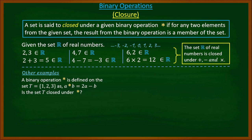Let's look at another example. A binary operation star is defined on the set T, which contains the elements one, two, and three, as a★b = 2a − b. Is the set T closed under the operation?